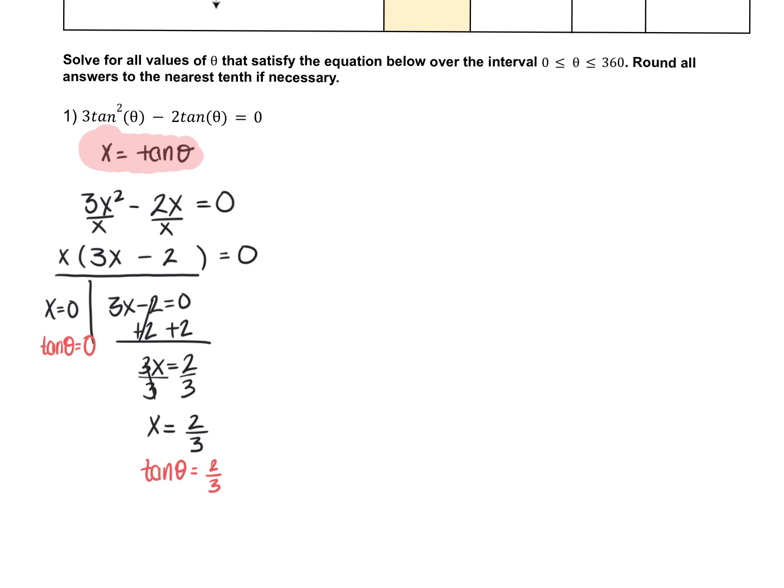I'm going to do the work over here to find the thetas. So I have tan of theta is 0, and I have tan of theta is 2 thirds. To find the angle, you can do second tan of 0 degrees, put that in the calculator and get a value.